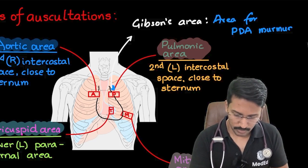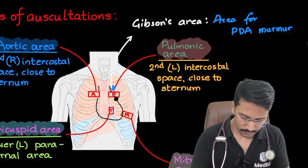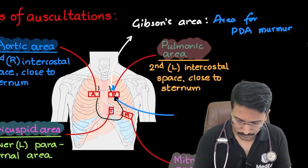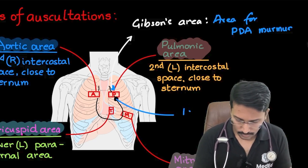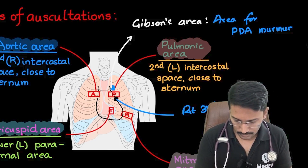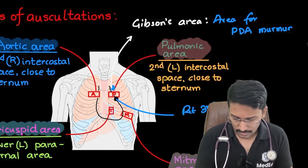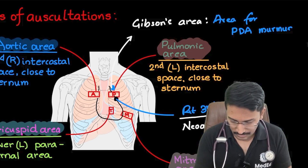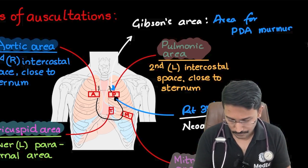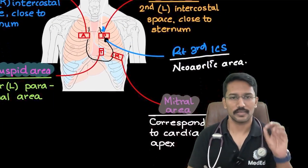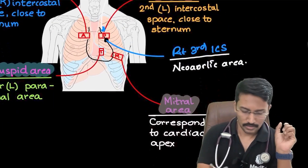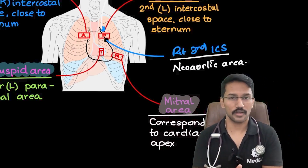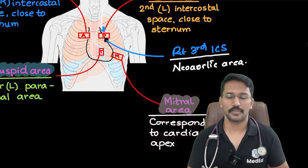There is one more area to remember: the right third intercostal space close to the sternum. This area is called the neo-aortic area. So this is an additional area for the aortic valve. For the aortic valve we have two areas: one on the right second intercostal space, which is the primary aortic area, and the neo-aortic area in the third intercostal space on the left side.